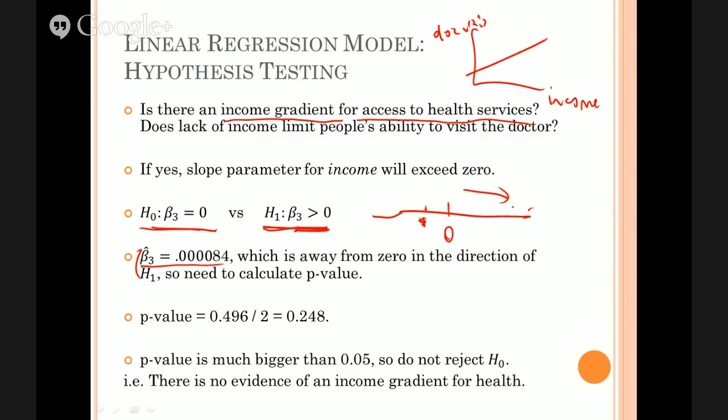But because in this case we do have a positive value for beta 3 hat somewhere here, and that's in the direction of the alternative hypothesis, then we do have to calculate the p-value.